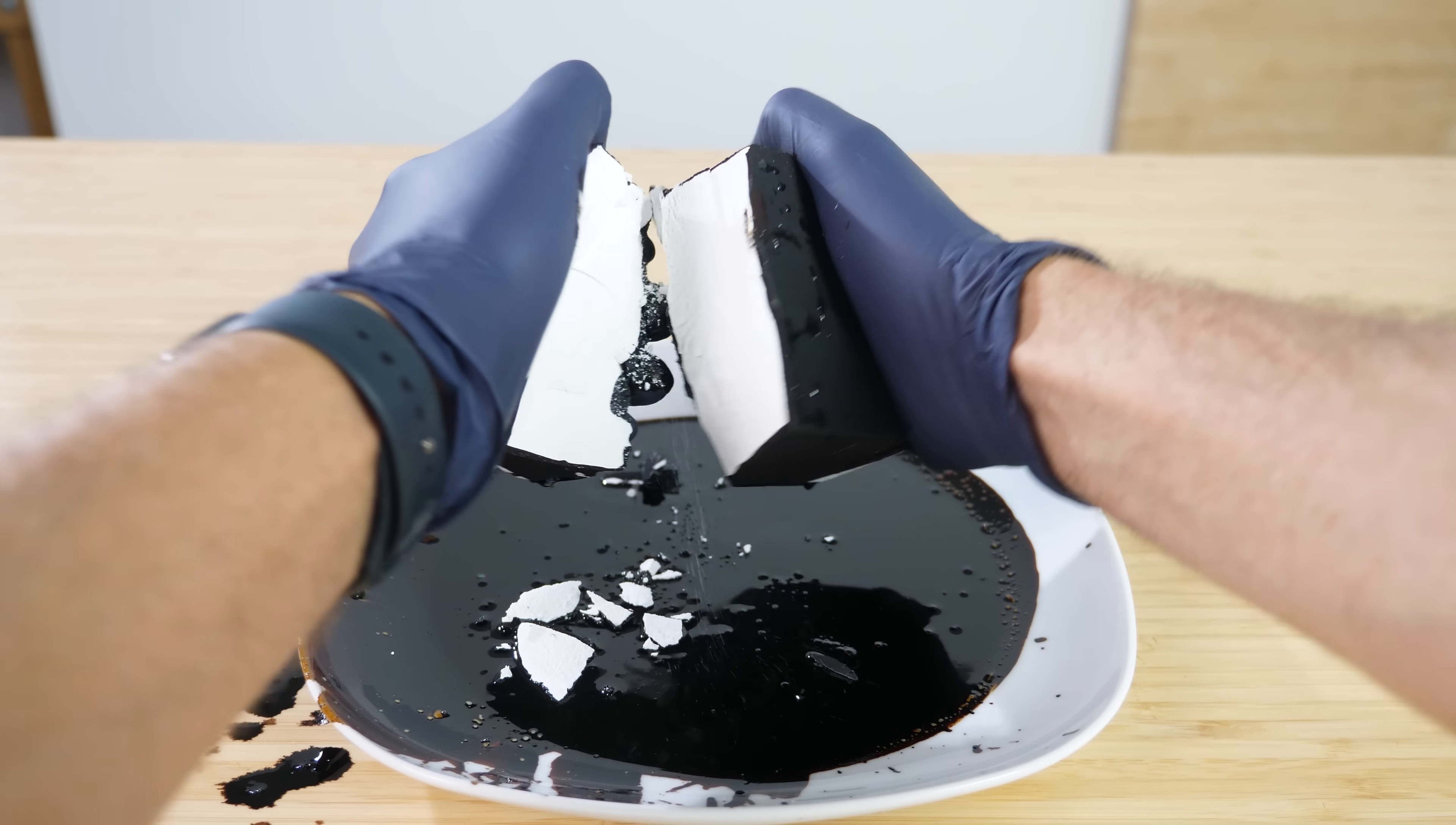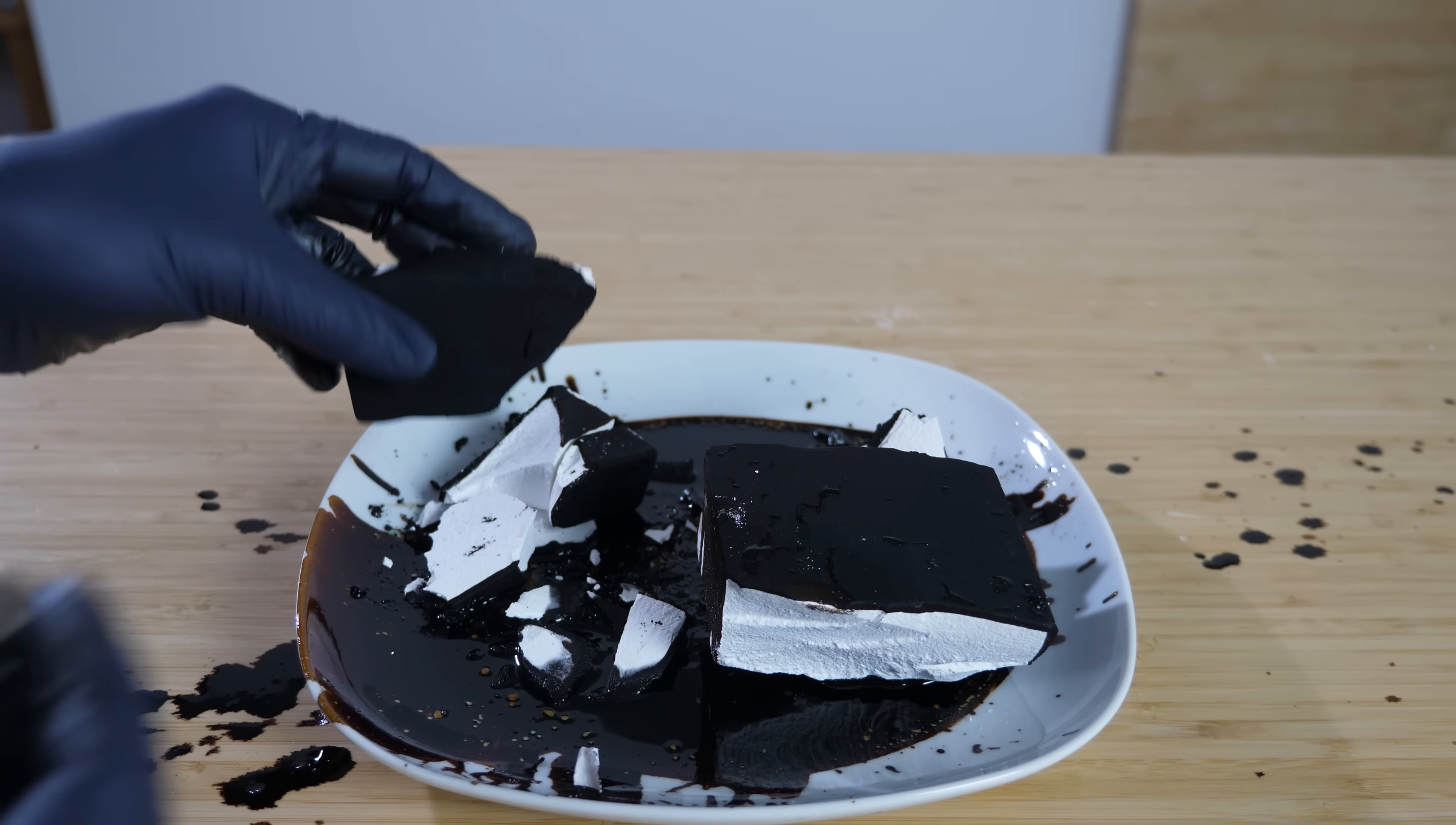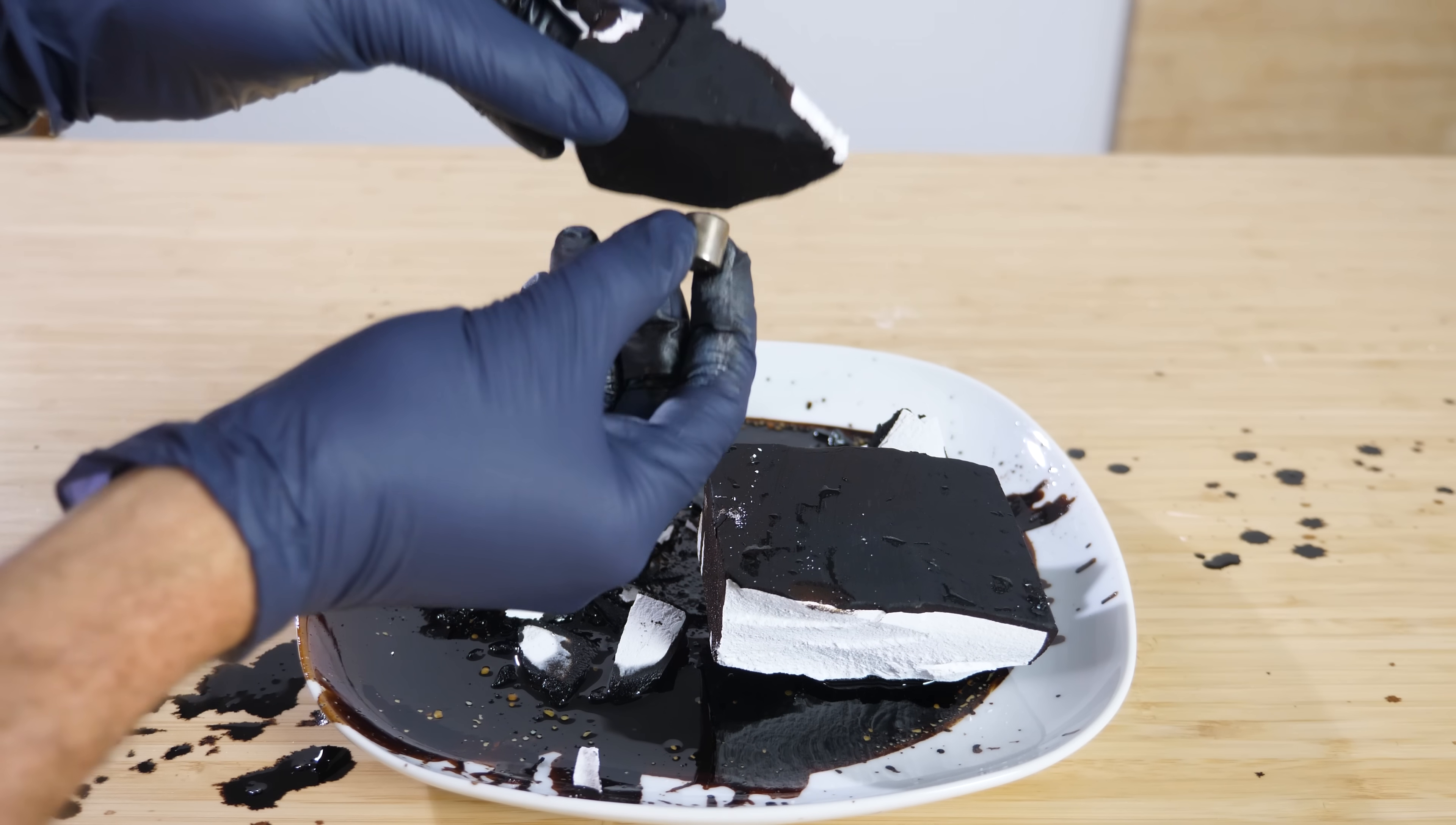If we break open the one with the ferrofluid, you can see how all the liquid now fills the gaps in the pores. The liquid's trapped in there though. Even if I bring a strong neodymium magnet to it, it won't pull the ferrofluid out of the chalk. But now the chalk is just magnetic and the magnet sticks to it. So we've made magnetic chalk.